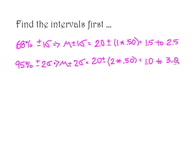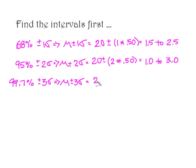What about the last piece — 99.7%? The empirical rule says plus or minus three standard deviations. Beginning at the mean of 2.0 and going plus and minus three standard deviations, that gives me an interval of 0.50 up to 3.5.